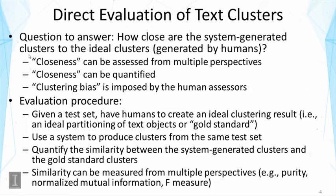The general procedure looks like this: given a test set of text objects, we ask humans to create the ideal clustering result — that is, to partition the objects and create the gold standard. They use their judgments based on the needs of a particular application to generate what they think are the best clustering results. This gold standard is then compared with the system-generated clusters from the same test set. We quantify the similarity between the system-generated clusters and the gold standard, and this similarity can be measured from multiple perspectives.